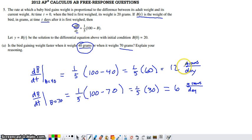Explain your reasoning. Well, the rate of change of the bird's weight is larger at a B value of 40, at a weight of 40, than it is at 70.